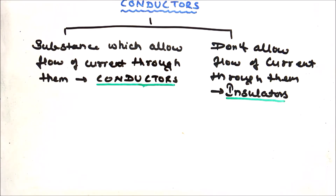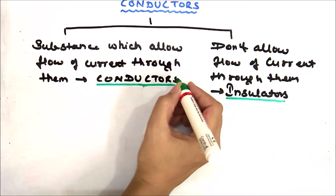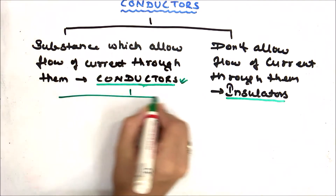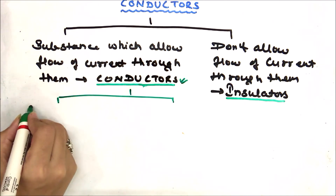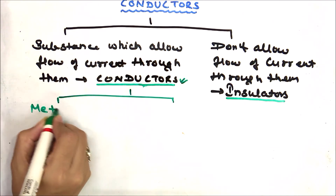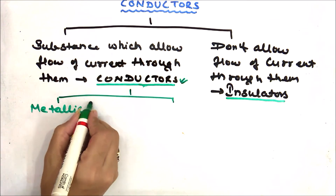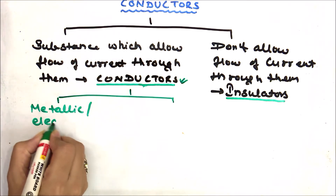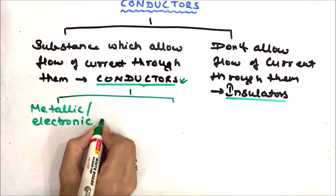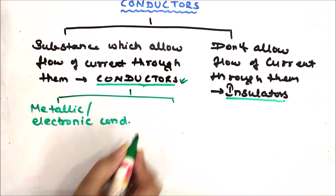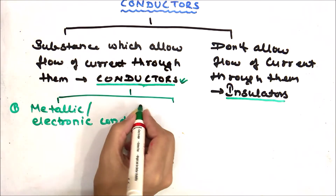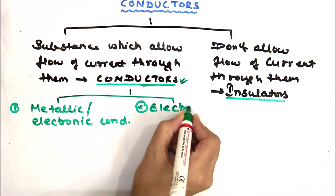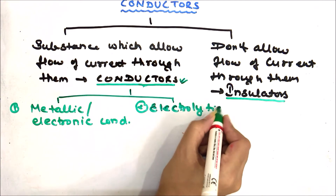Now students, we have to deal with the topic of conductors. There are two types of conductors. The first one is metallic conductor, and the second one is electrolytic conductor.